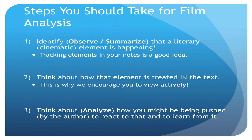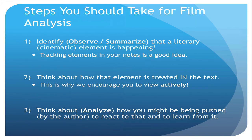The second step is to think about how that element is treated. What is happening that the director has chosen a Dutch angle? What is happening that they have chosen this type of framing? What is going on that they choose to move the camera on a dolly rather than just pivot in a pan or a tilt? And then ultimately, step three — and this is the analysis part — we have to think about how we might be being pushed by the director to react and to learn from that choice. If a character is always filmed in a certain angle, and then by the end of the film they're filmed in a different angle, we observe that, we track that, and now we apply deep thinking: what is this change in camera angles saying about the character, and therefore what can we learn from that?